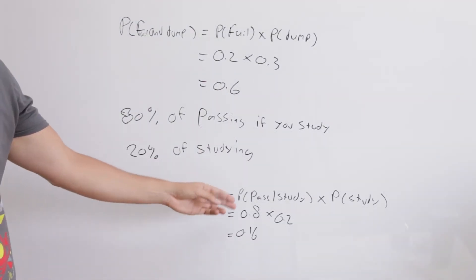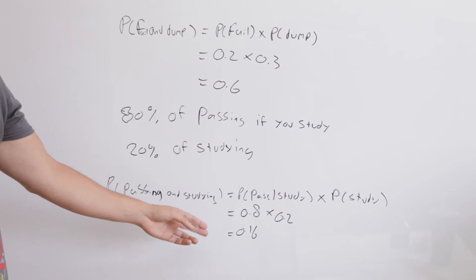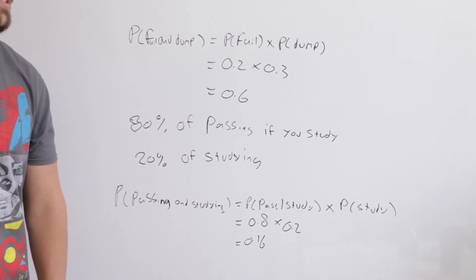It boils down to 0.8 times 0.2, which equals 0.16. So you've got a 16% chance of passing your test.